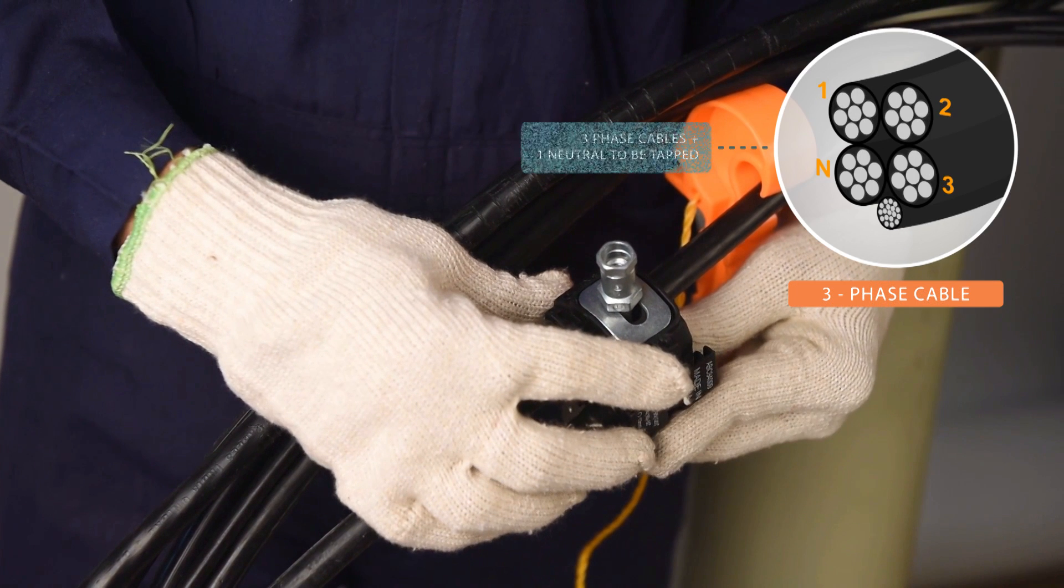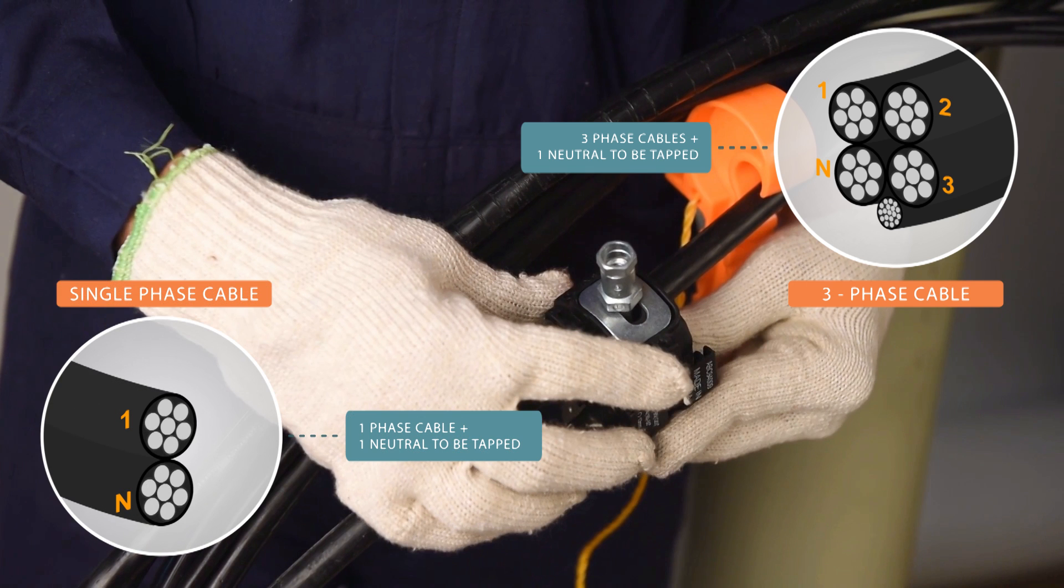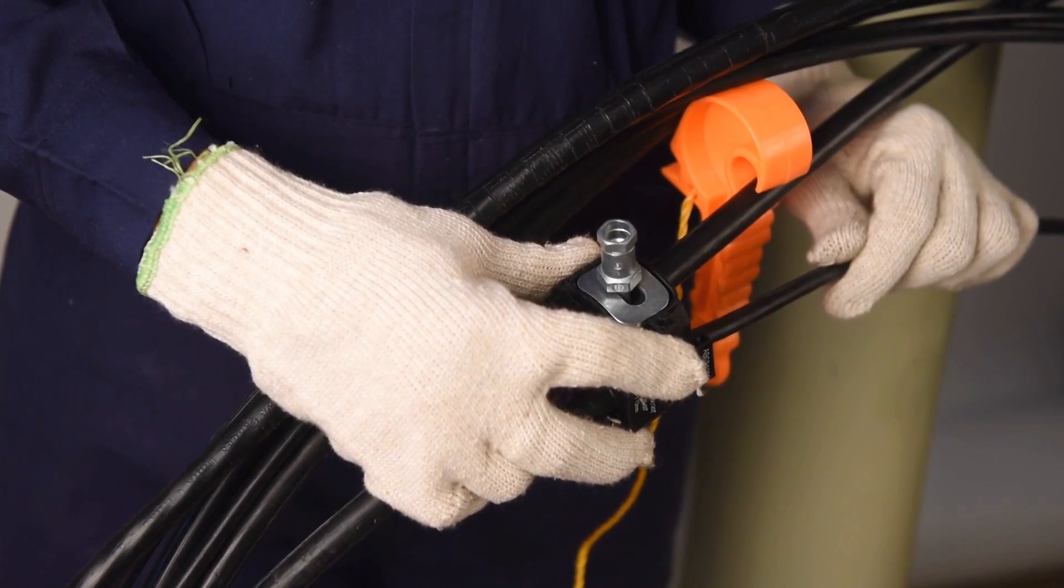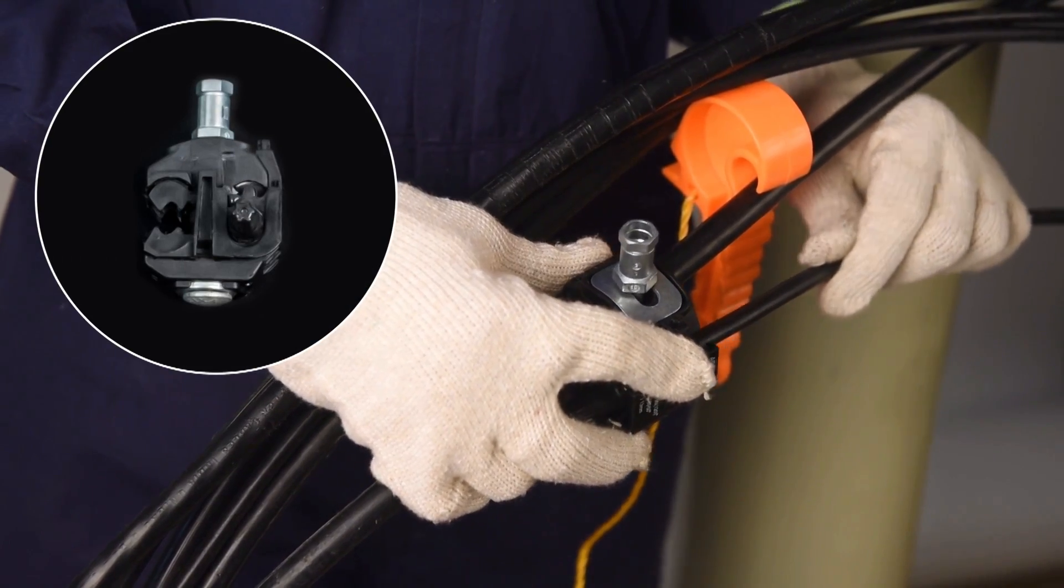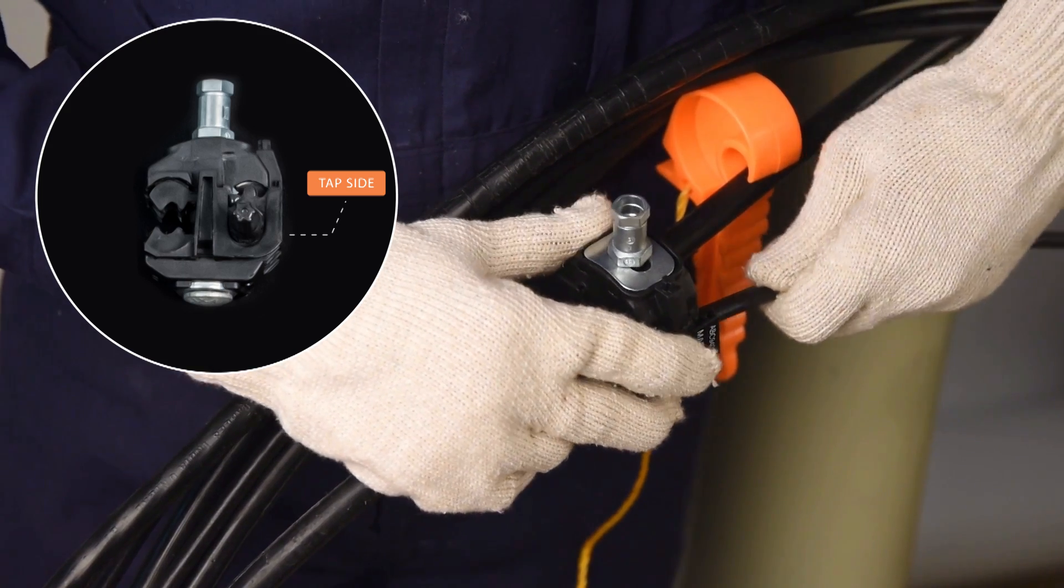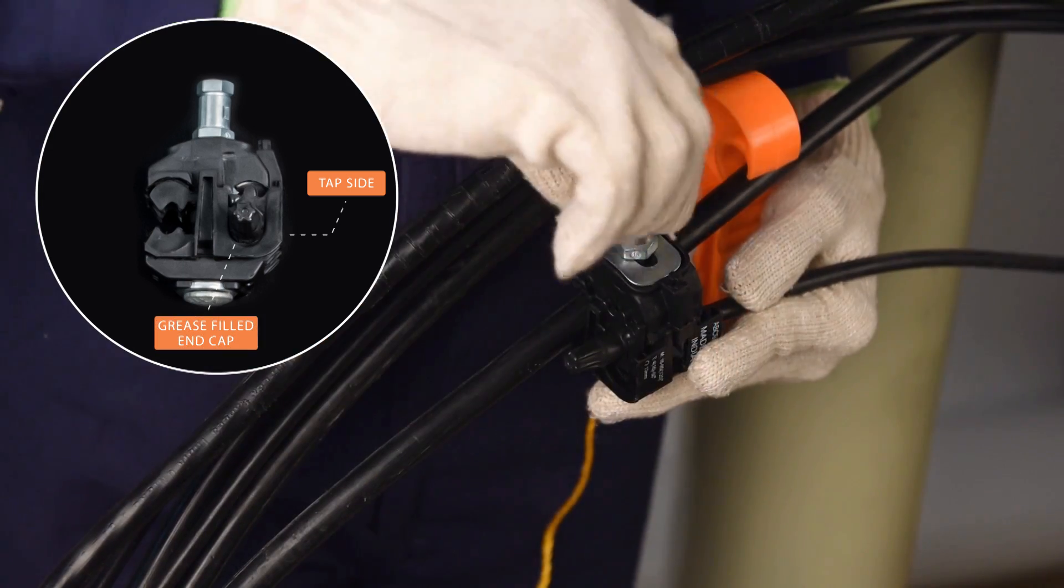For single phase, one phase and other neutral. Take the tap cable and locate it in the piercing connector tap side and make sure its end is terminated inside the grease filled end cap.